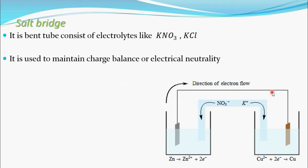The electrons go through the external circuit to the reduction half-cell. In the copper sulfate solution, Cu²⁺ ions are present on the copper rod. The incoming electrons are captured by these Cu²⁺ ions, which undergo reduction: Cu²⁺ + 2e⁻ → Cu. This copper is then deposited back onto the copper electrode.